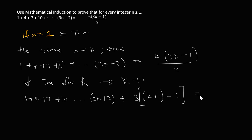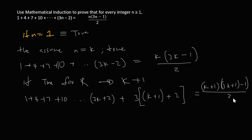And that should equal: k plus one, times open bracket three times k plus one minus one, all over two. So the left hand side is the sequence, and the right hand side is this formula. I need to prove that the right hand side equals the left hand side.